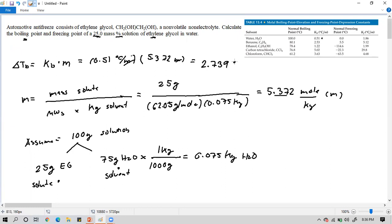That would be 2.739 degrees Celsius. And of course, what's the boiling point of water? We said in the discussion that for boiling point, you add 100 degrees Celsius. Therefore, delta Tb would be 100 degrees Celsius plus 2.739 degrees Celsius, and our answer is 102.739 degrees Celsius. That is the boiling point elevation of our solution with the presence of 5.372 molal of ethylene glycol. Take a screenshot.